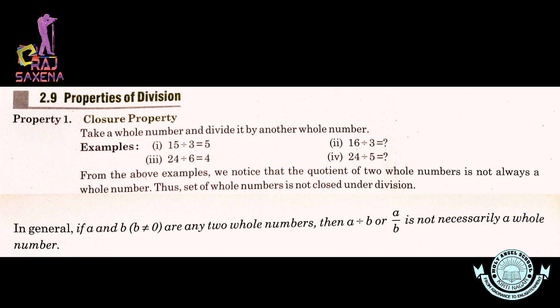Is liye whole numbers ka set division ke liye closed nahi hai. In general, we can say that if a and b — and b jo hai woh zero nahi hona chahiye — are any two whole numbers, then a divided by b is not necessarily a whole number. Agar a aur b dono whole numbers hain toh a ko b se divide karne per jo quotient aayega woh whole number ho bhi sakta hai aur nahi bhi ho sakta hai.